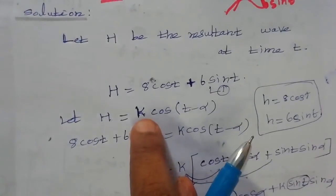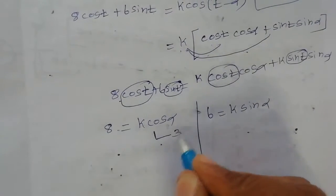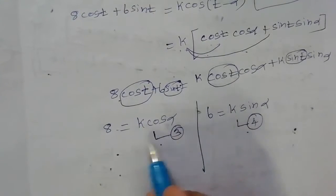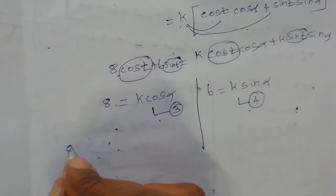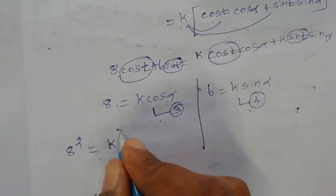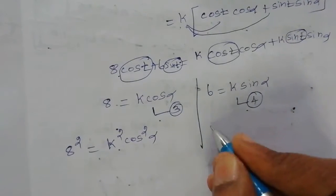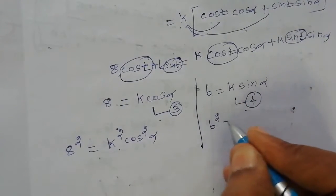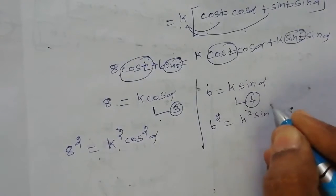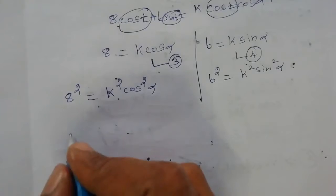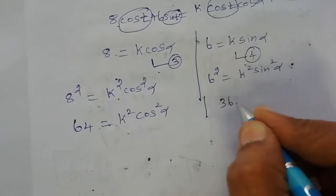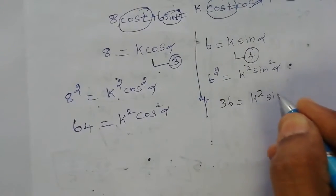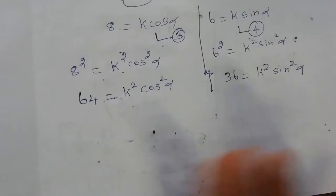First k find out. Equations 3 and 4, square both. Equation 3 squared: 8 squared equals k squared cos squared alpha. Equation 4: 6 squared equals k squared sin squared alpha. 8 squared value 64 equal to k square cos square alpha. 36 equal to k square sin square alpha.